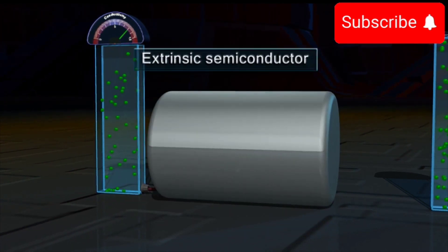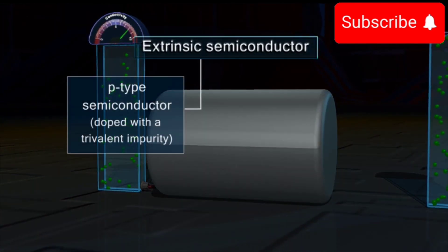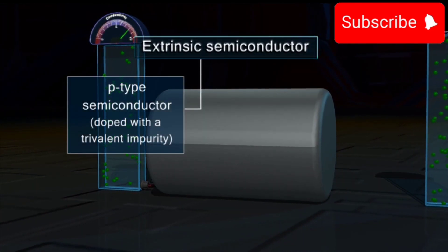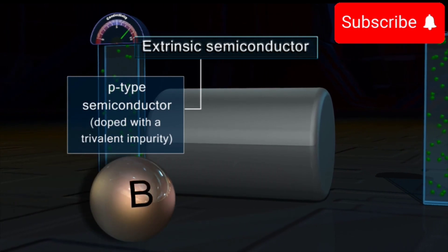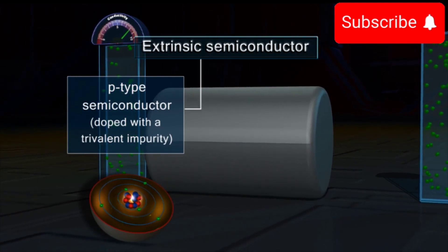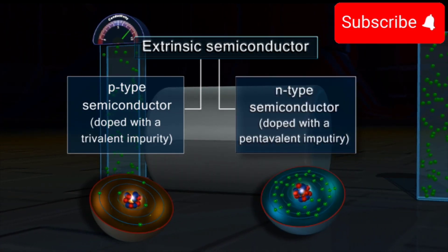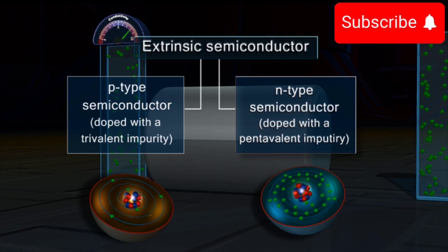They are of two types: 1. P-Type Semiconductor, doped with a trivalent impurity. 2. N-Type Semiconductor, doped with a pentavalent impurity.